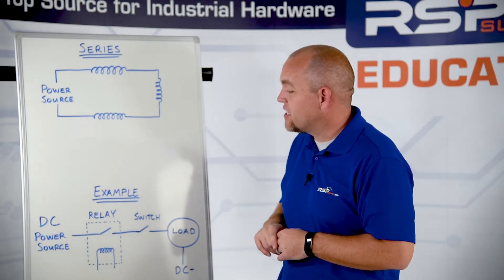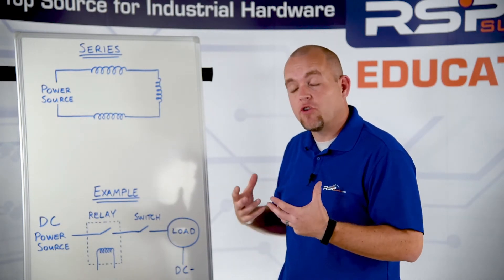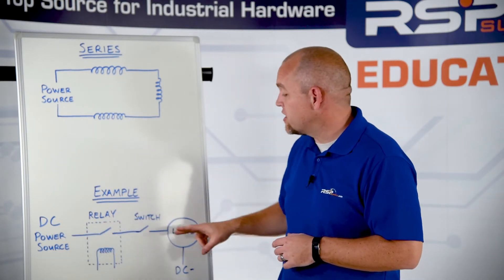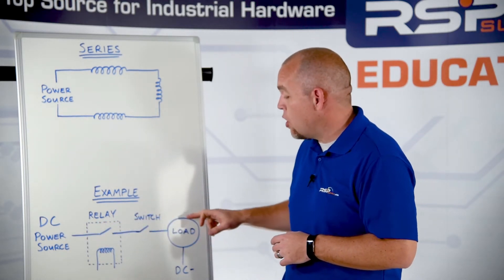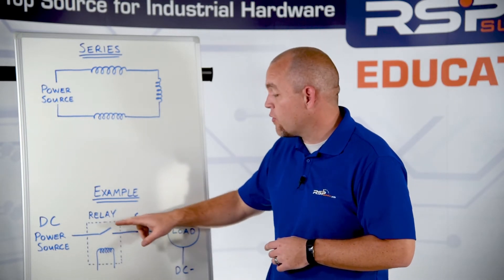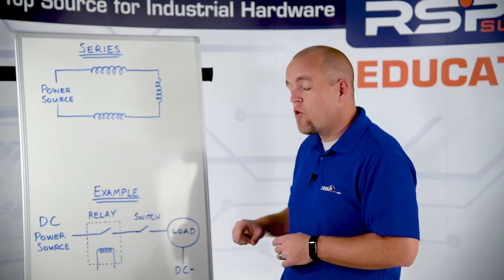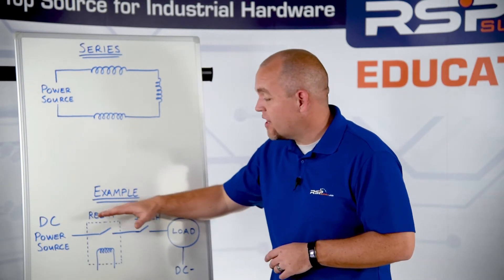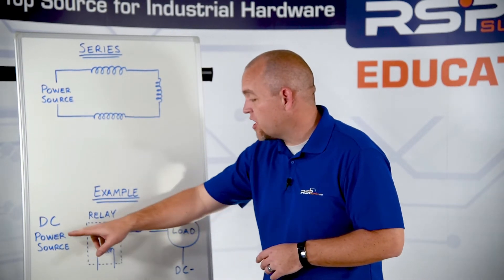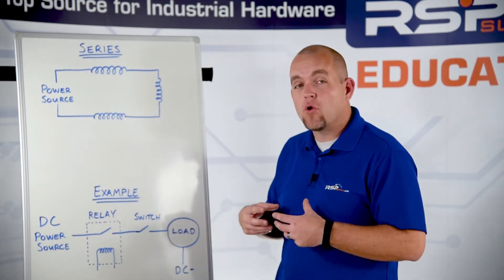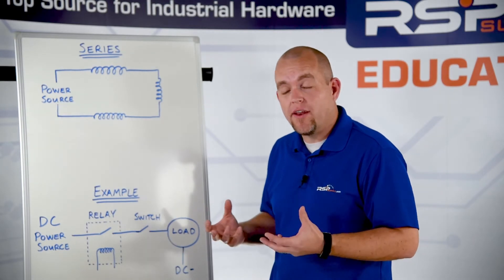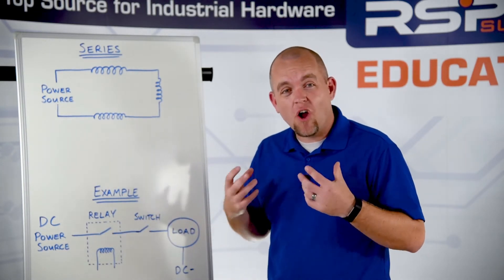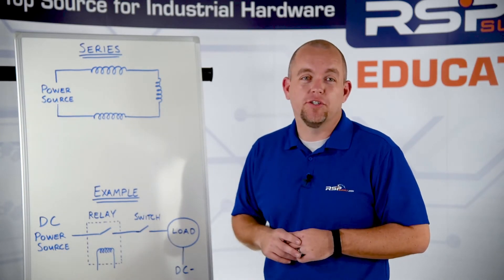Down here, you can see the example we talked about in the industrial application, where we have power that eventually is going to be powering our motor. It needs to pass through a relay and a switch before the motor will actually be energized. Once the relay is closed and the switch is closed, power can pass through and the motor can turn on. This is a great safety measure to ensure that the motor does not start unless we absolutely want it to.